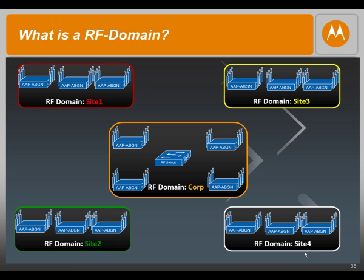A quick overview of how an RF domain would be deployed or configured. In this example, RF domain Corp could be a Motorola's office in Schaumburg. Site-1 could be a Motorola office in the UK. Site-2 could be a site in Germany. Site-3 could be in France. And Site-4 could be in Spain. All these APs essentially have the common profile — things like mwireless and mguest are common to every single site. However, every single site is in a different country, and hence the country code has to be different for each of these sites. That's where RF domain comes very handy. We can create different RF domains with different country codes, however all these APs would still get one single profile. It helps us easily manage and configure our network.